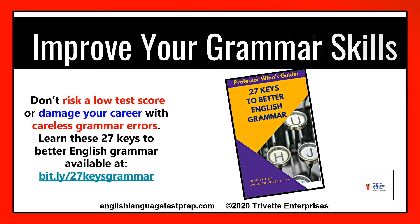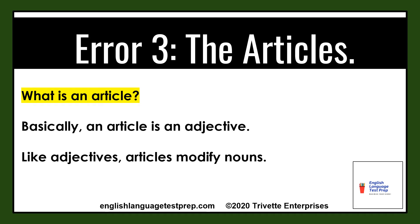Now let's examine one of the basic lessons of English 101 class: the articles. However basic, even advanced students who didn't learn the articles early on in their careers have problems later. At this stage of your English career, trouble with the articles is really unacceptable. However, bad usage of the articles makes our number three grammar mistake. What is an article? Basically, an article is an adjective. And like adjectives, articles modify nouns.